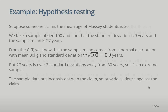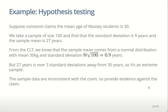Here's a quick example of hypothesis testing. Suppose someone claims the average age of Massey students is 30 years old. To assess this, we take a simple random sample of size 100, find a standard deviation of 9 years and a sample mean of 27 years. Our sample is lower than the claim. Of course our sample doesn't cover the entire population, so it could well be 30 and we just happened to get people on the younger end of the distribution — this is still plausible. But how plausible? Can we figure out how extreme this sample is?